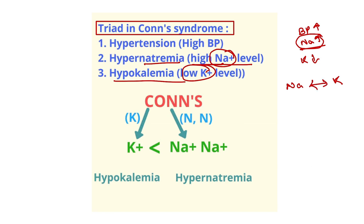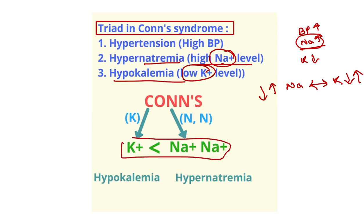Sodium and potassium behave in reverse: when sodium increases in blood, potassium decreases; when sodium decreases, potassium increases — they are like enemies. They are usually not present at high concentration at the same time. So in Conn's syndrome, hypernatremia and hypokalemia develop in the blood.